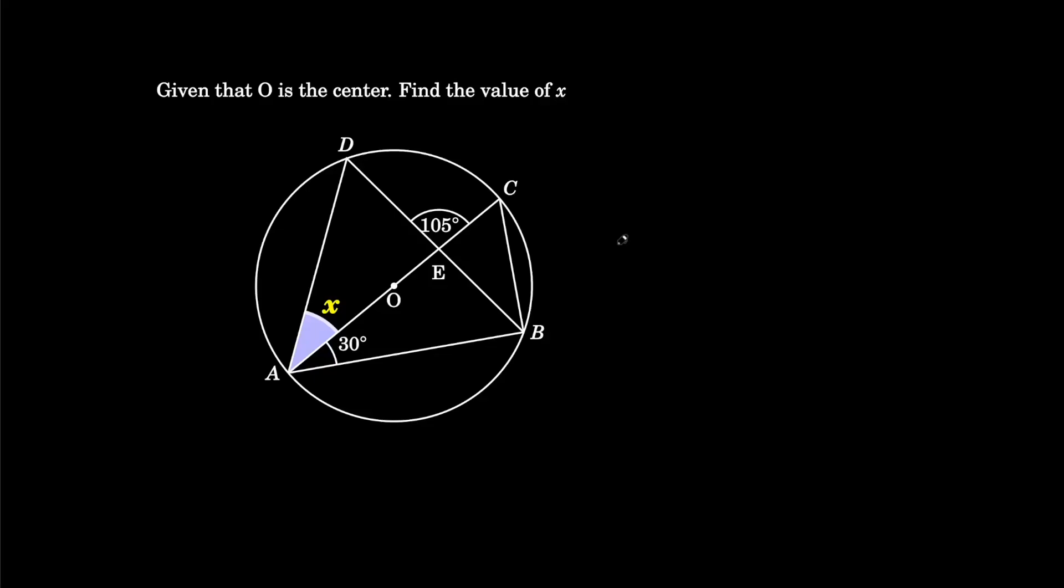We are to find the value of x in this diagram given that O is the center. If O is the center, it means that AC is the diameter. And if AC is the diameter, that means you are going to be having a semicircle.